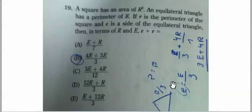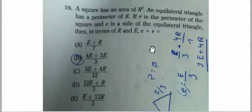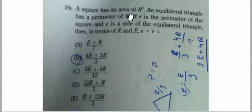A square has an area of R squared. Therefore, we know that R is the length of one of the sides. You might draw a quick little sketch of a square and put R, R, R, R for the four sides. So R times R is equal to the area.